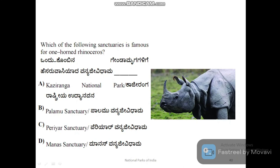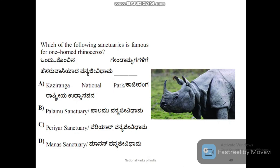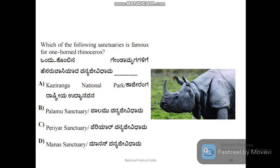For exams, they often frame questions like: 'Which sanctuary is famous for one-horned rhinoceros?' As we know, Kaziranga National Park in Assam is where single-horned rhinoceros are protected. We'll see you again with a new video. Till then, take care. Bye-bye.